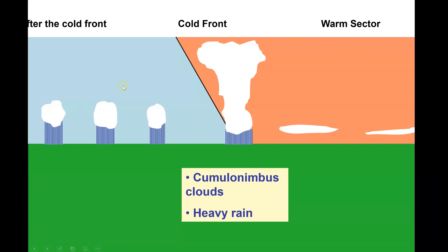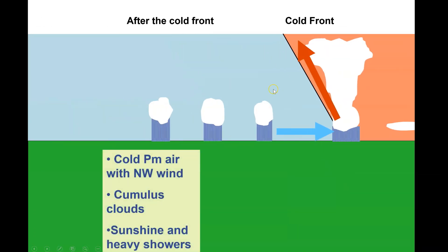Then as it begins to clear, this is the next bit of a depression. I wonder what weather does it bring? As you move over then after the cold front, you've got now the cold PM air, this time coming from the northwest. Then you have this broken cloud, these cumulus clouds that bring the classic sunshine and showers weather. So that's the weather that you get as the depression passes over here.